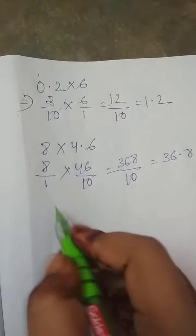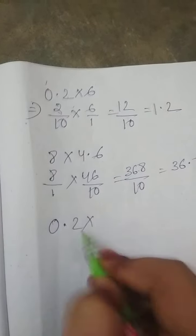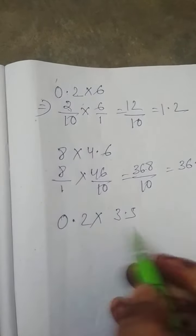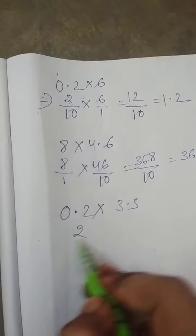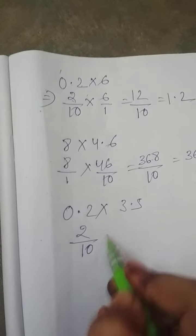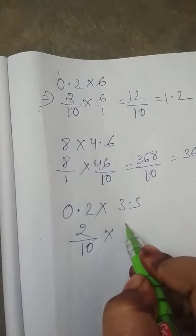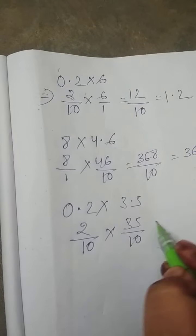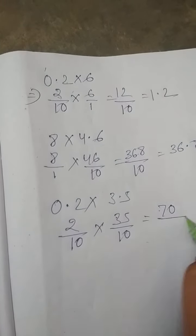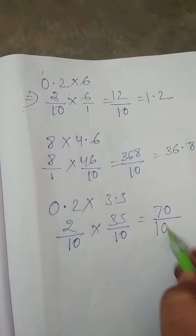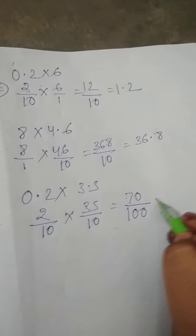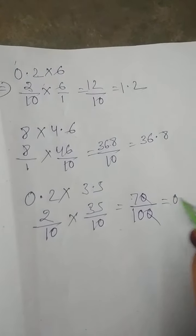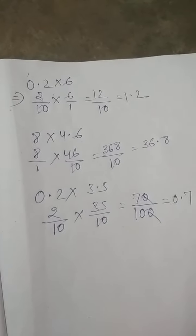One more example: 0.2 into 3.5. In this case also, we have to first convert into fractions, then multiply. 0.2 is 2 by 10 and 3.5 is 35 by 10. That gives 70 by 100 — cancel zeros — and the answer is 0.7.